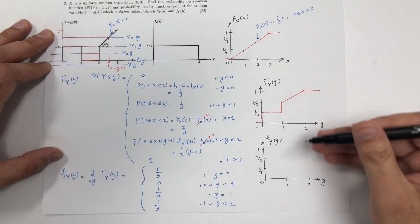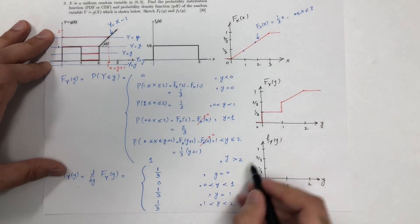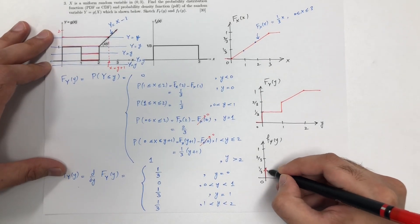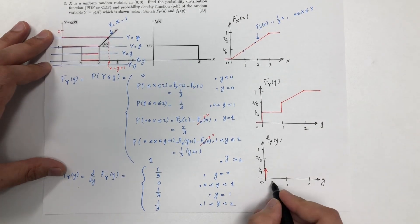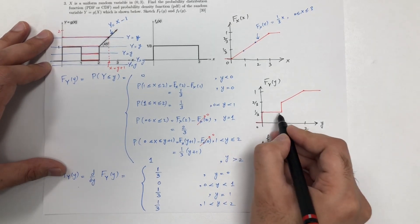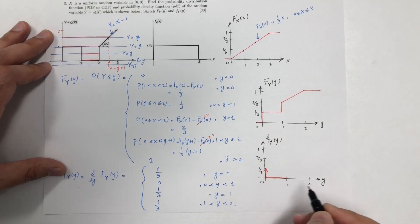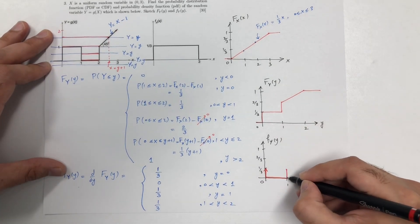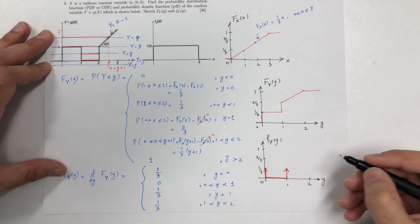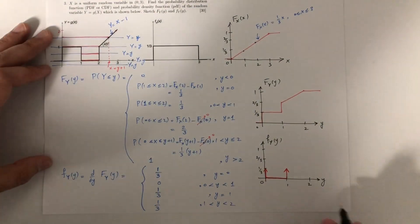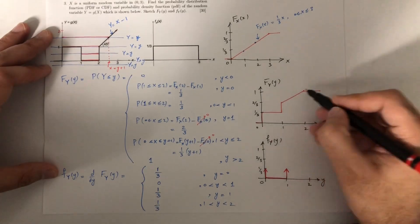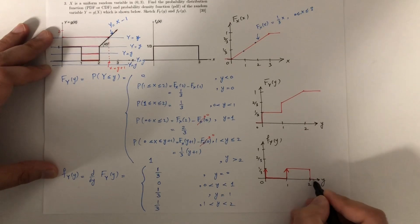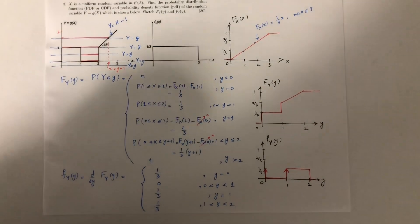The density function is the derivative of the CDF. At y equals 0, there is a delta function with height 1/3. Between 0 and 1, the slope of the CDF is 0, so the density is 0. At y equals 1, there is another delta function with weight 1/3. Between 1 and 2, it is a constant slope of 1/3, so the density is a straight line at 1/3. Everywhere else the density is 0. That's the end of the solution.